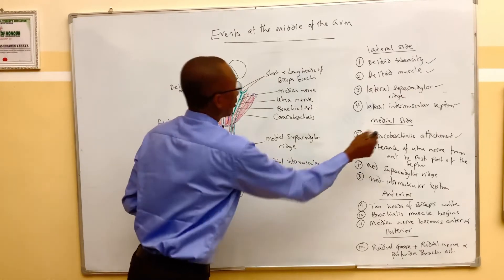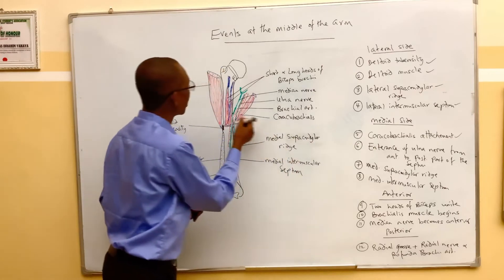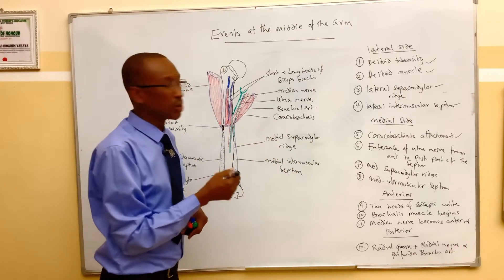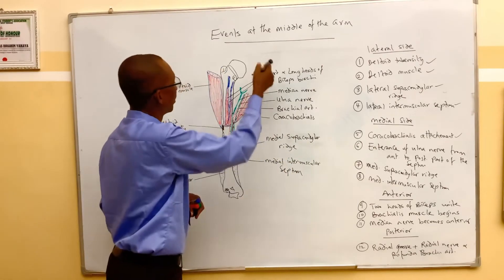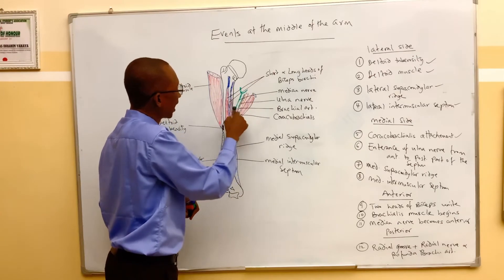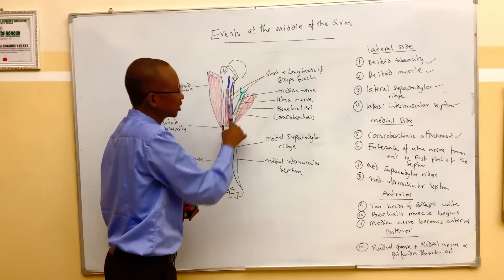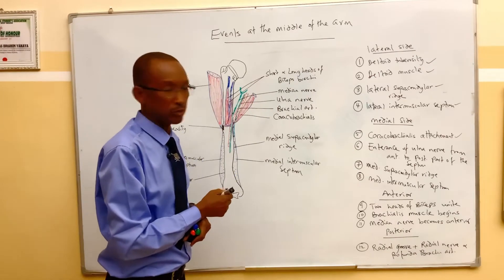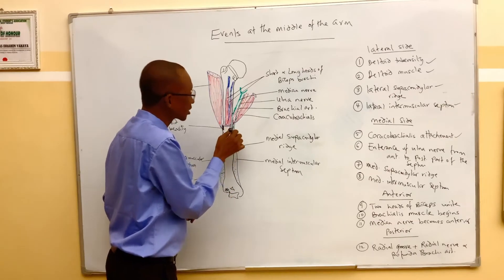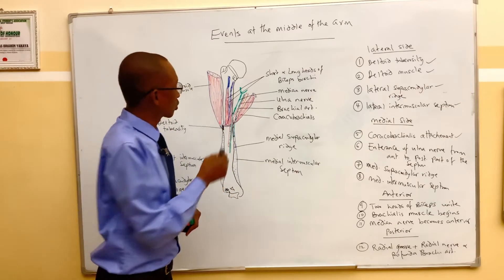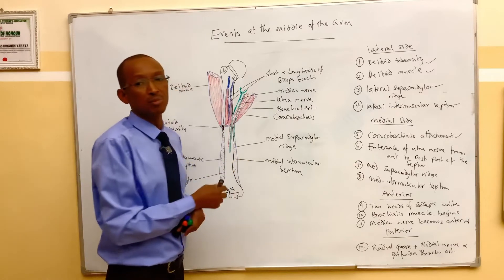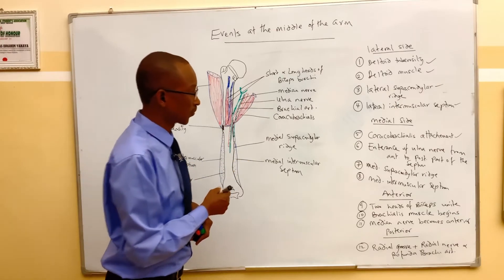On that medial portion of the medial side of the arm, the ulnar nerve from the brachial plexus comes downward and lies anterior to the medial intermuscular septum, and then it finally perforates the medial intermuscular septum so that it lies behind the medial intermuscular septum.